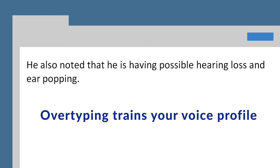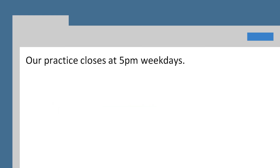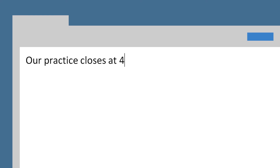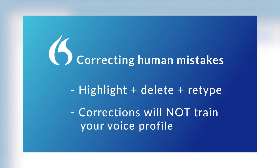But what if you have dictated a text and now realise you want to change it? Maybe you said the wrong thing, you stuttered, or there was a loud noise in the background. This is what we call a human mistake. There is a second method of correction for human mistakes, and this method does not affect your voice profile. To correct a human mistake, you highlight the text, delete the text first, and then re-type or re-dictate the text. So if you got something wrong or you changed your mind, always highlight the text, delete the wrong text first, and then re-type it or re-dictate. Otherwise, you would mess up your voice profile. If you delete the wrong text first, the correction will not train Dragon.